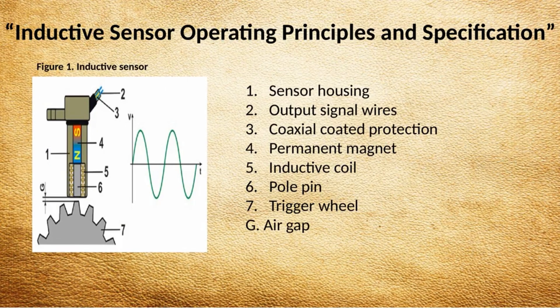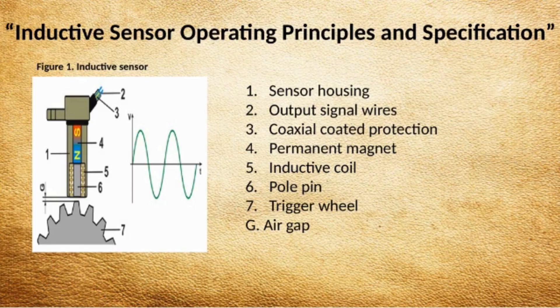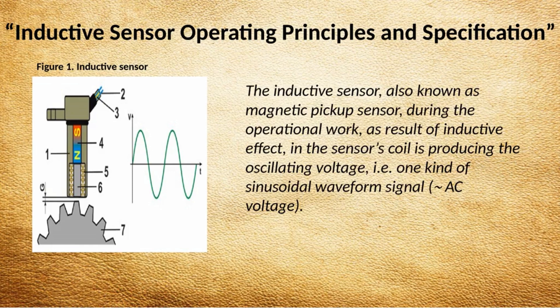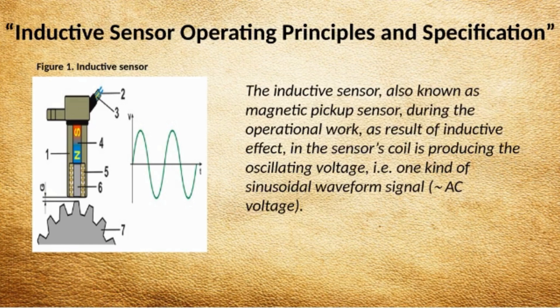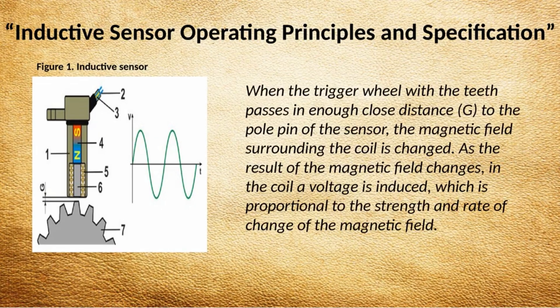Inductive Sensor Operating Principles and Specification. The inductive sensor components include: 1. Sensor Housing, 2. Output Signal Wires, 3. Coaxial Coated Protection, 4. Permanent Magnet, 5. Inductive Coil, 6. Pull Pin, 7. Trigger Wheel, and G. Air Gap. The inductive sensor, also known as a magnetic pickup sensor, during operation, as a result of the inductive effect, produces an oscillating voltage in the sensor's coil — a sinusoidal waveform signal.